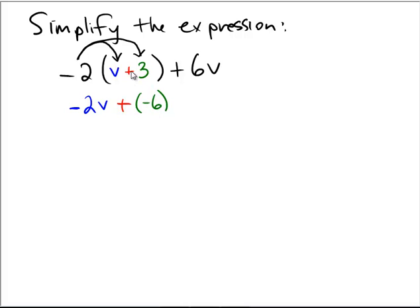Notice I kept the plus sign the same and distributed simply the negative 2 versus the v and the negative 2 versus the 3. Then tacked on to the end here, we have a plus 6v.